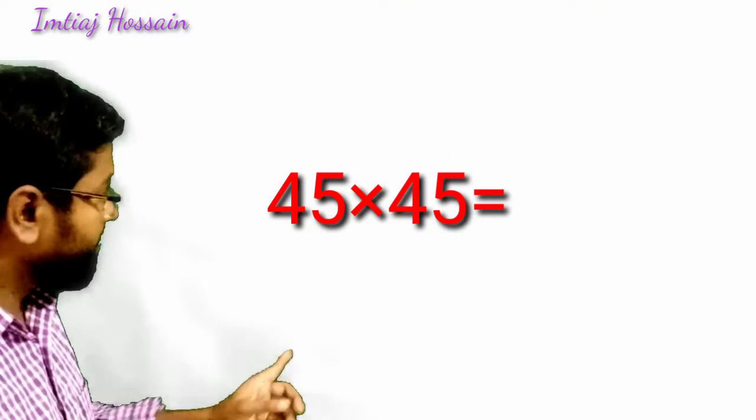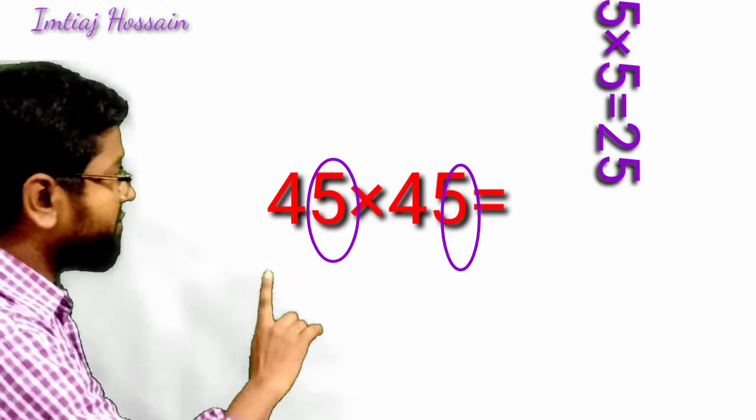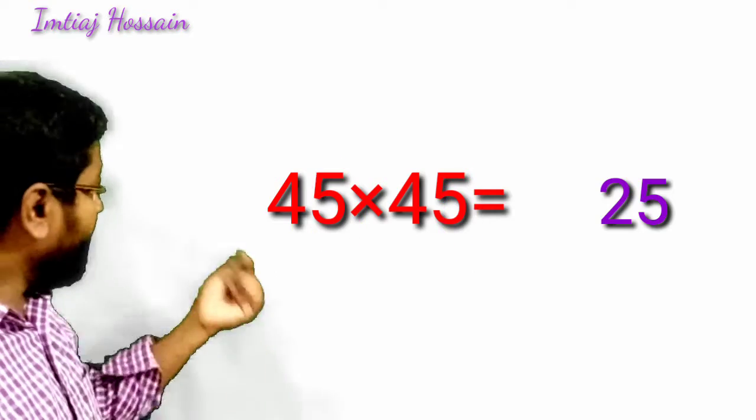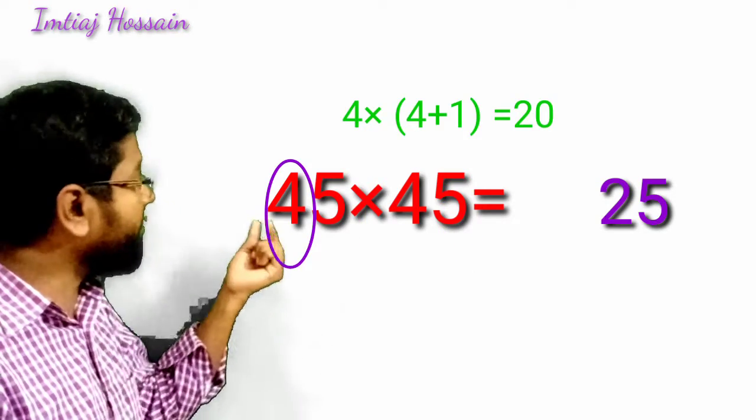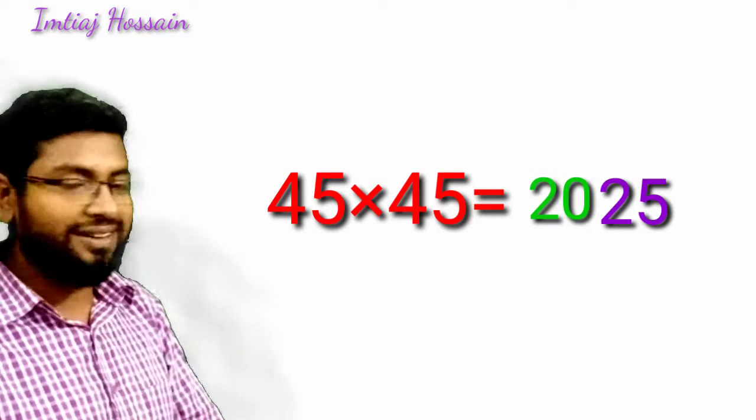Look, 45. Last digit is 5. So 5 times 5 is 25, I will write it as the last digits. Now, 45, the digit is 4 and the next number is 5. 4 and 5, if I multiply, it will be 20. So 20 will be there, giving us 2,025.